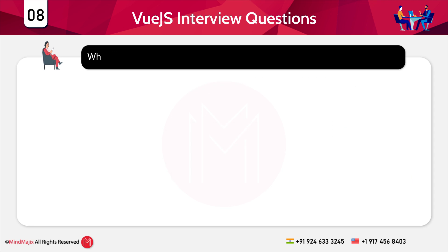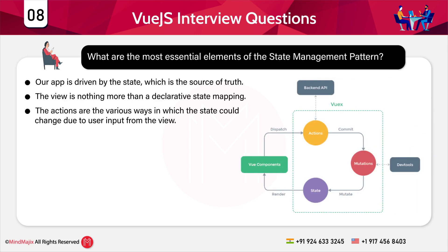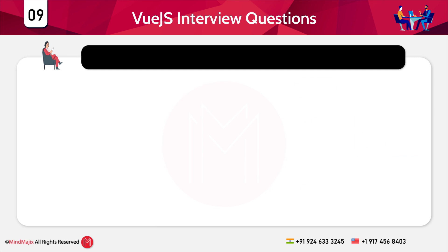The next question is: what are the most essential elements of the state management pattern? The primary components of state management are state, view, and actions. State is the source of truth that drives our application. The view is a declarative mapping of state. Actions are the various ways the state can change due to user input from the view.